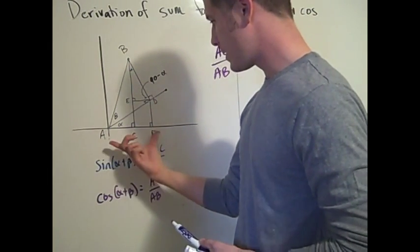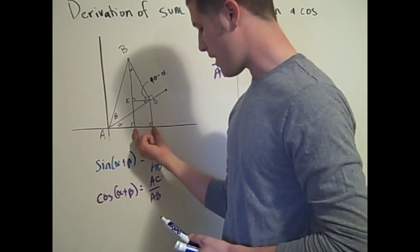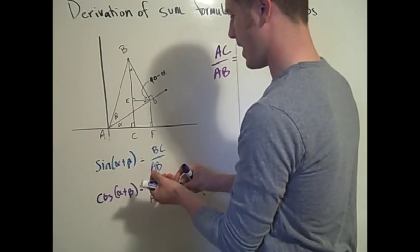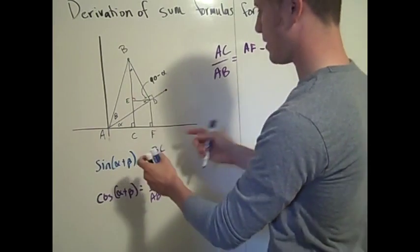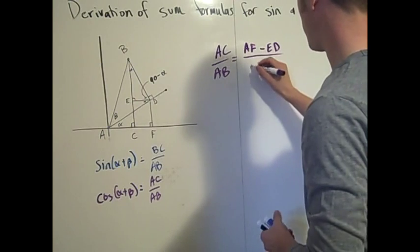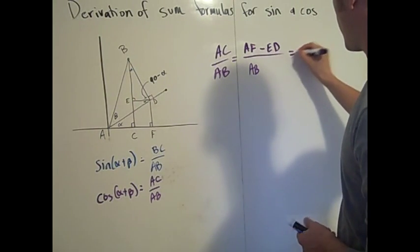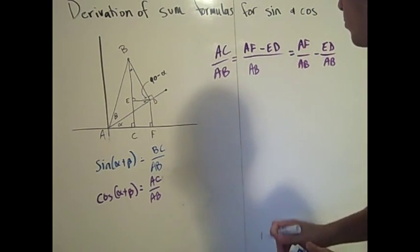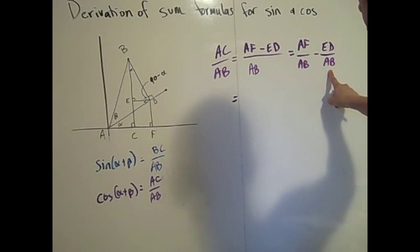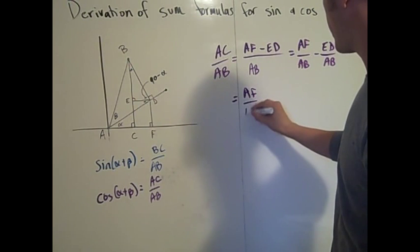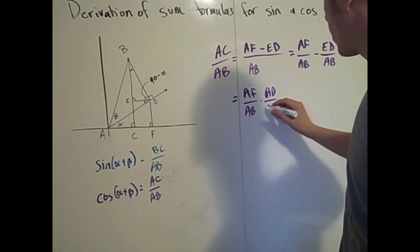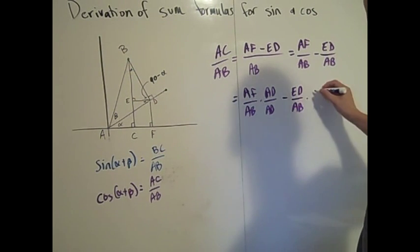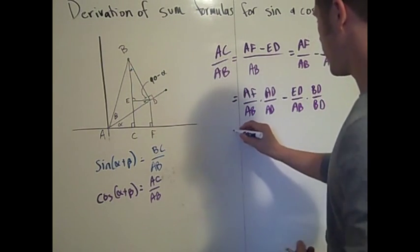AC, this length here, is AF minus CF. Since CF is the same as ED, we can say AC is AF minus ED, all over AB. This is the same as AF over AB minus ED over AB. I'm going to multiply each of these ratios by 1 — AF over AB times AD over AD, minus ED over AB times BD over BD — and then using the commutative property, this becomes AF over AD times AD over AB, minus ED over BD times BD over AB.